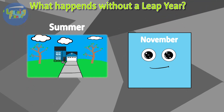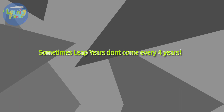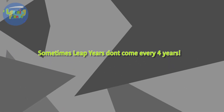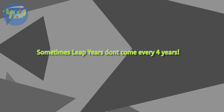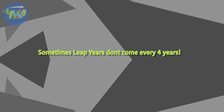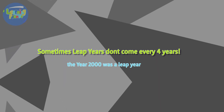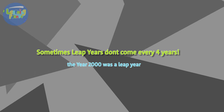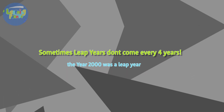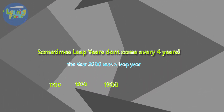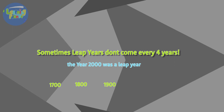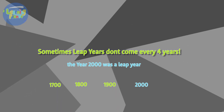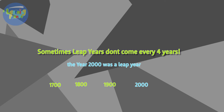Just thinking about it, it's odd. But sometimes leap years don't come every four years — because in the years 1700, 1800, and 1900, there was no leap year. But the year 2000 was a leap year. So don't fear!